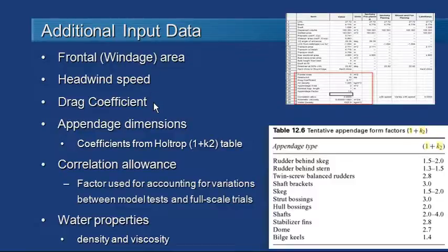We should enter in a drag coefficient to take into account the shape of the vessel above the waterline. A box-shaped superstructure would have a drag coefficient of about 1, a nice streamlined superstructure perhaps 0.8, and a superstructure with a lot of drag perhaps 1.1 or 1.2.